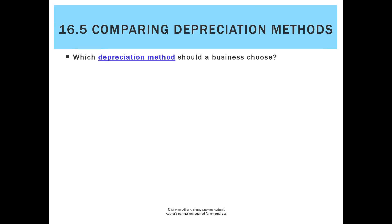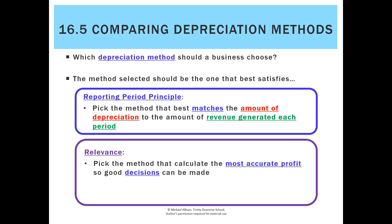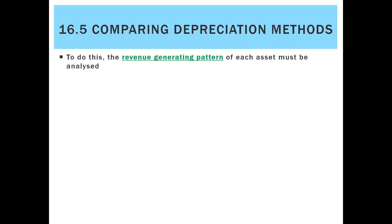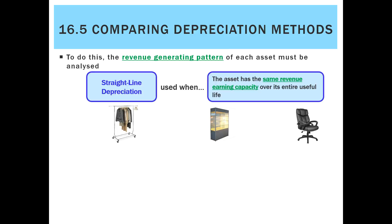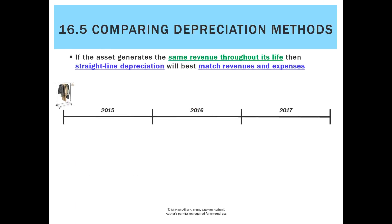Which method should we use? Go back to the reporting period principle: pick the method that best matches the amount of depreciation with the revenue the asset generates. Pick the method that gives the most accurate profit so good decisions can be made. The key term is the asset's revenue-generating capacity or pattern. If an asset generates roughly the same revenue each period, use straight-line — examples include shop fittings, display equipment, and furniture.